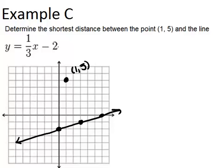Now the shortest distance between a point and a line will be a perpendicular line through the point that hits the line. So what that means is we need to figure out what would a perpendicular line to this original line look like.